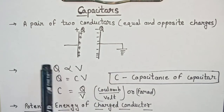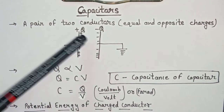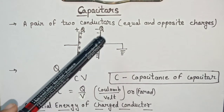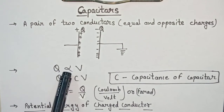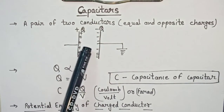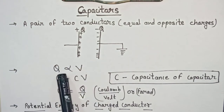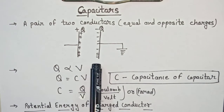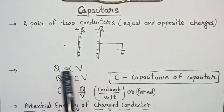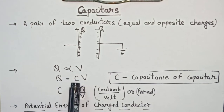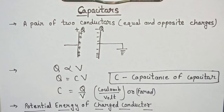In a capacitor, charges are stored, so where there is charge, there will also be some potential. Charge Q is directly proportional to the potential V — the greater the potential, the greater the number of charges, and vice versa. Both are directly proportional: Q ∝ V. Mathematically, when we remove the proportionality sign, we introduce a constant C, which is known as the capacitance of the capacitor.